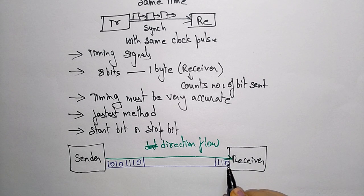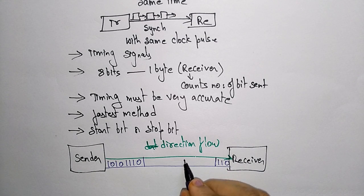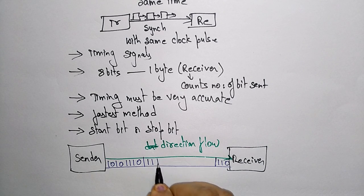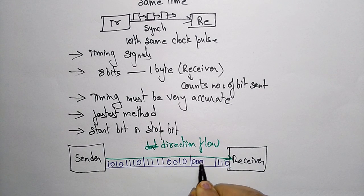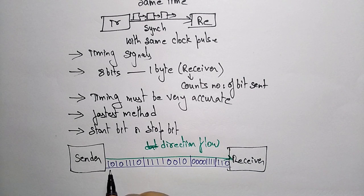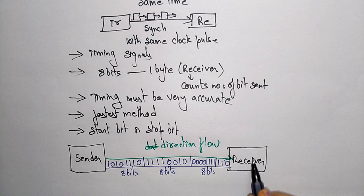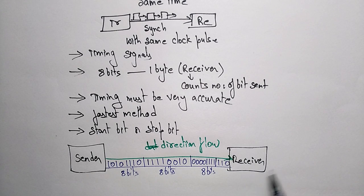After eight bits, the receiver recognizes that eight bits are over and reassembles them as one byte. Then it takes another eight bits: 1, 1, 1, 1, 0, 0, 1, 0, and so on — 0, 0, 0, 0, 1, 1, 1, 1 — indicating a total of eight bits. The receiver counts the number of bits sent by the sender and makes it into one byte.